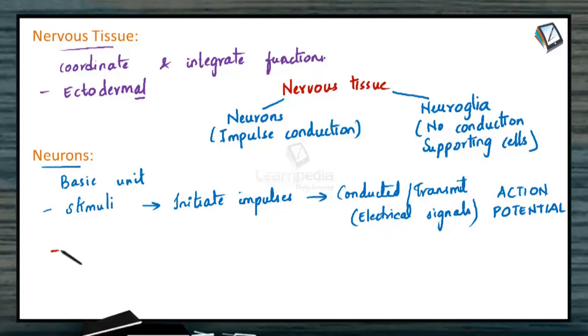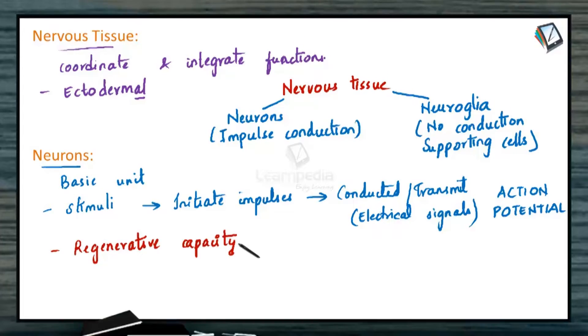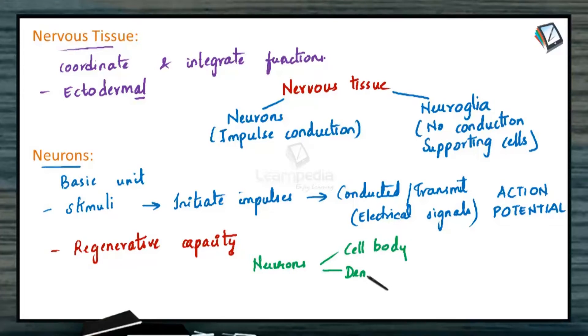These neurons have lost their capacity to divide — that is, they have no regenerative capacity. Basically, neurons include three parts: one is the cell body, the other one is the dendrites, and the last one is the axons.